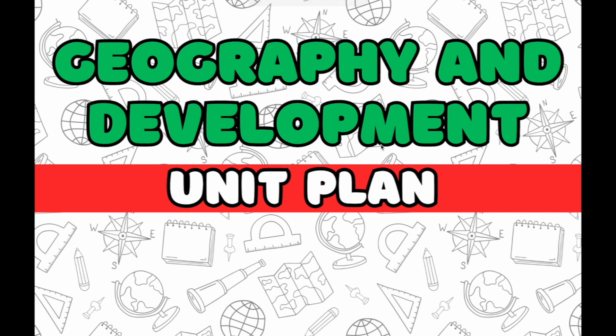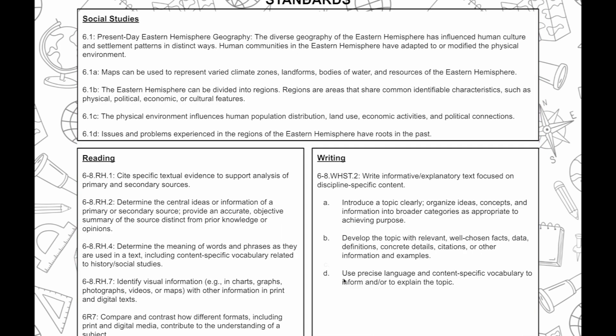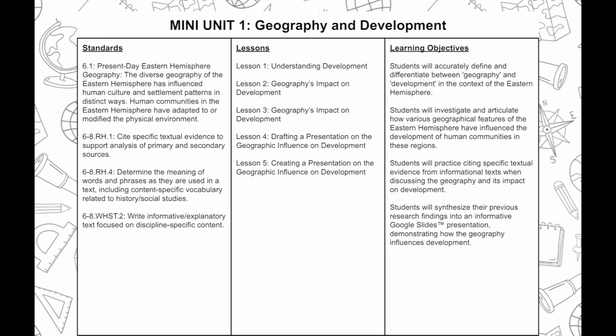This is the unit plan for geography and development — it's the whole unit plan, and I'm still developing it. The topics that will be in the full unit plan include: five themes of geography, maps, and to make it more rigorous, I'm adding maps and settlements as well as environmental concerns. But let's go to where I want the mini unit.